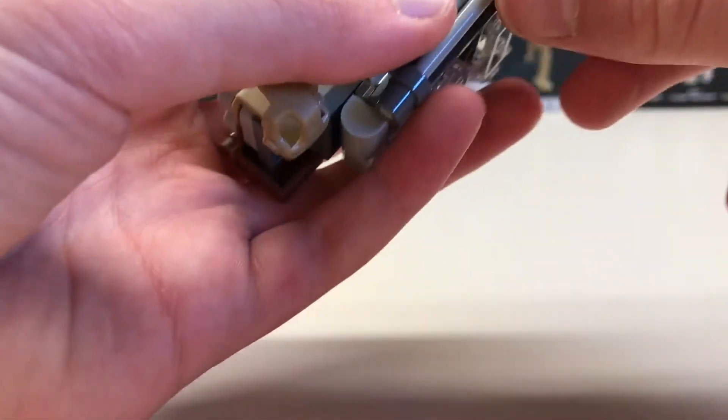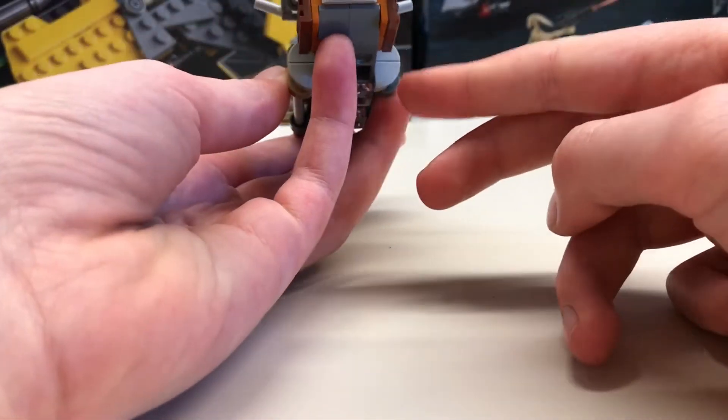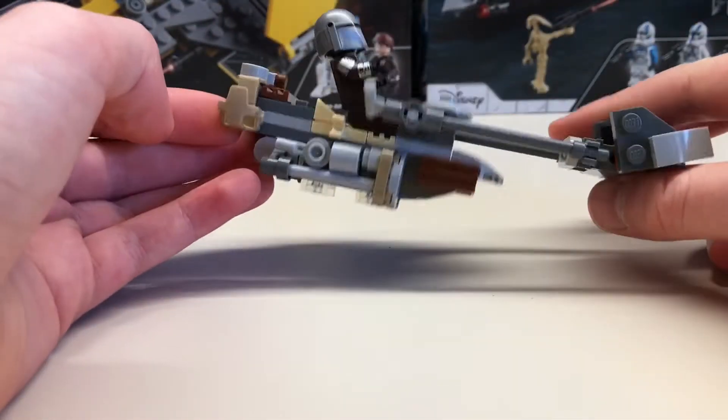And you need to make two of these on either side. I think that just gives the greebling a little bit more of a rounded look.